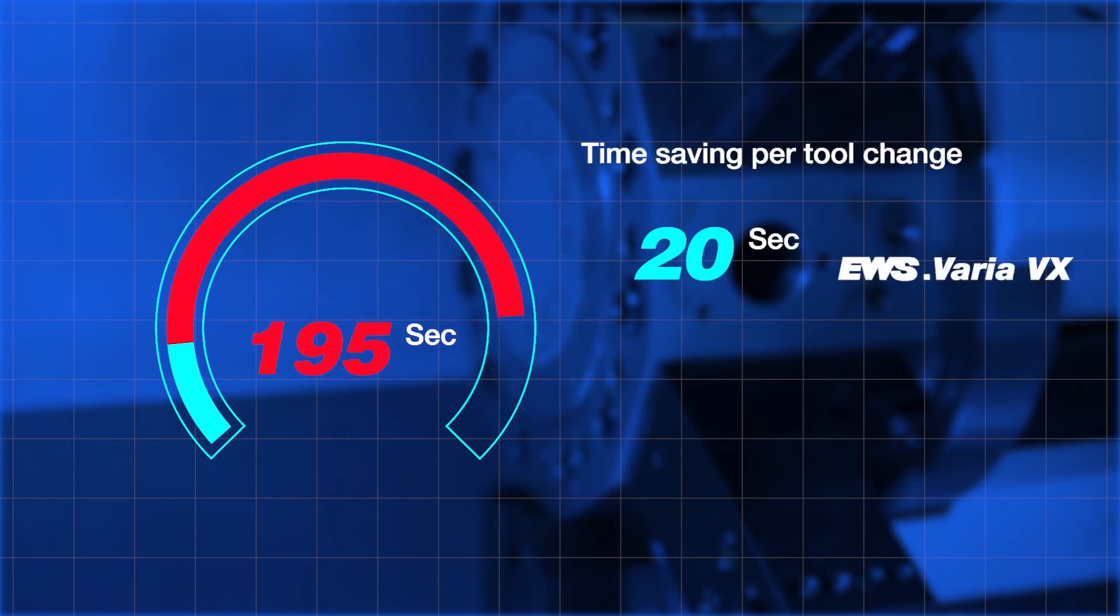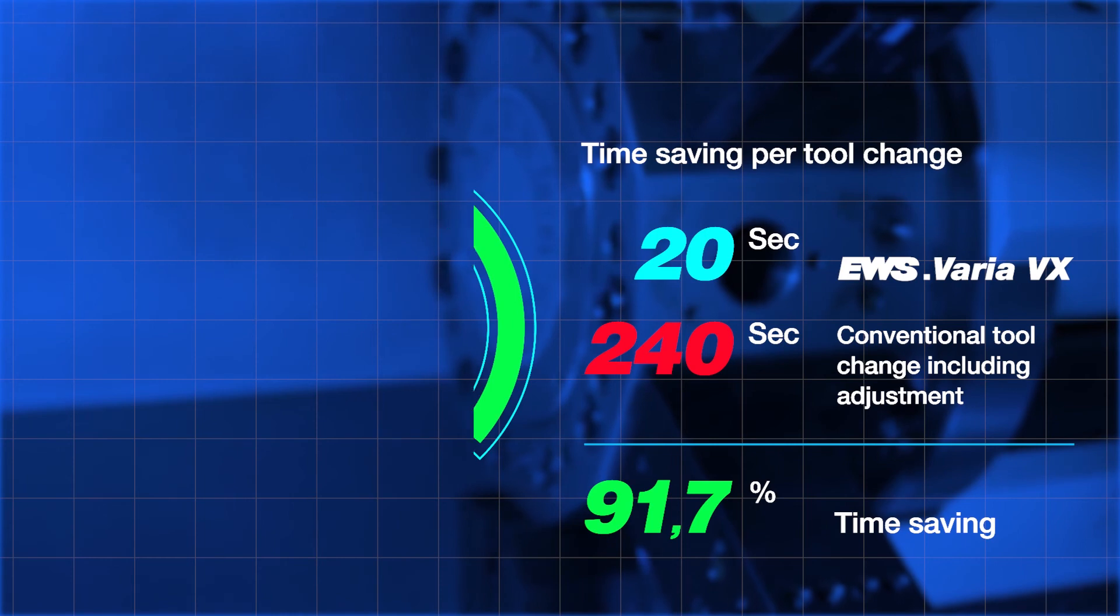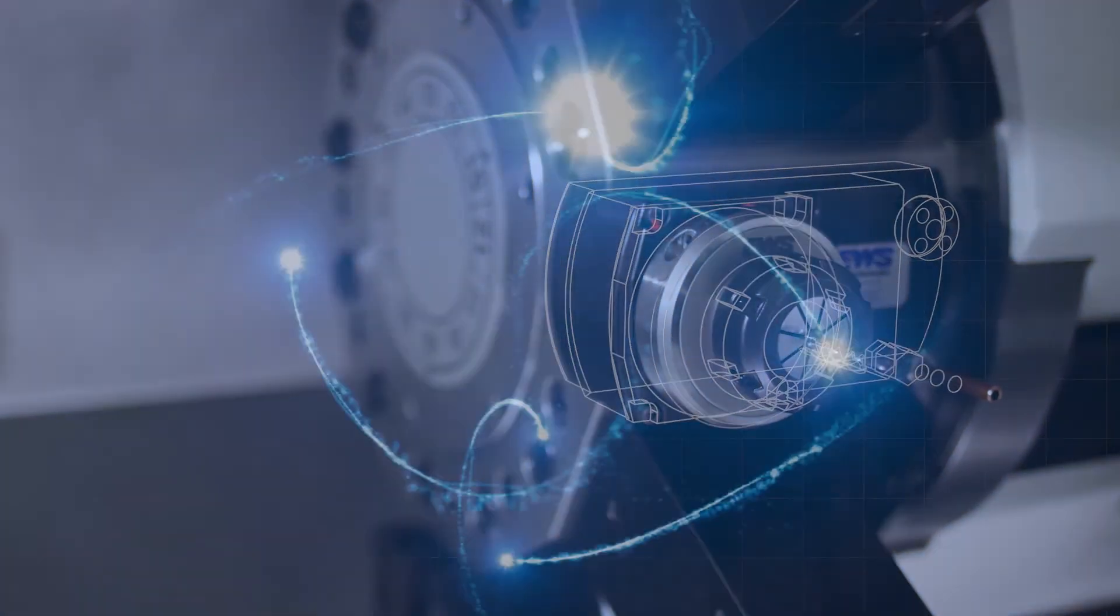With EWS Varia, the setup time is reduced up to 90%, which increases the productivity on machining cells significantly. The race is won in the pit stop.